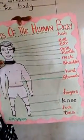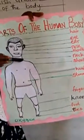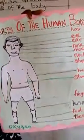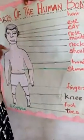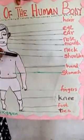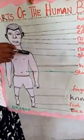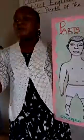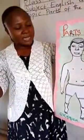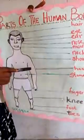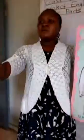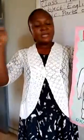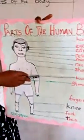We also have the neck. Touch your neck. This is my neck. We have the shoulder. Touch your shoulder. This is my shoulder. We also have the hand. Stretch your hand. This is my hand. You can see the hand.